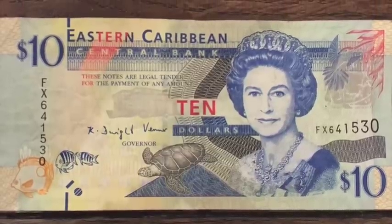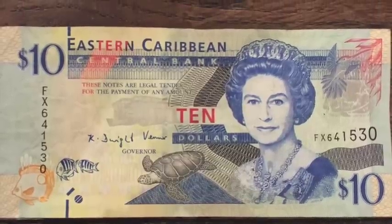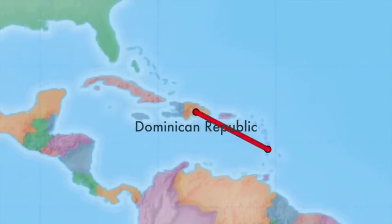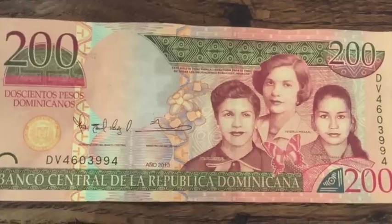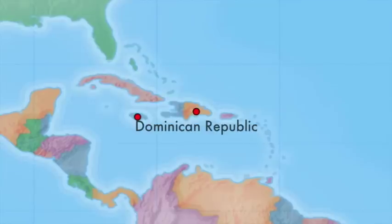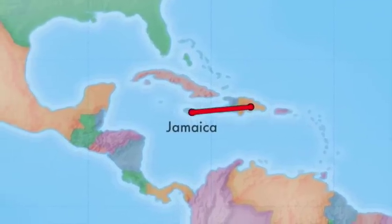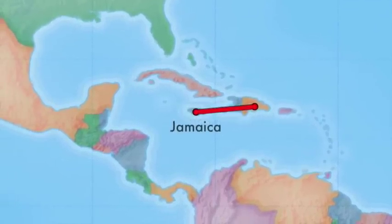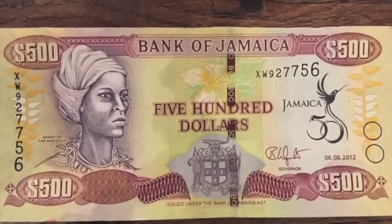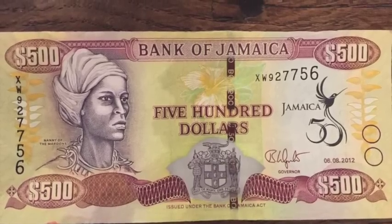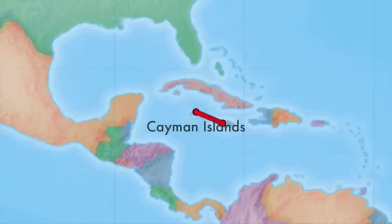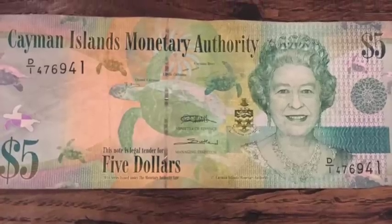From Barbados we go to the Eastern Caribbean, around St. Lucia, where they use Eastern Caribbean dollars. From the Eastern Caribbean we head north to the Dominican Republic — they use pesos there. From there we head to Jamaica, a popular tourist destination — here are the dollars from Jamaica.